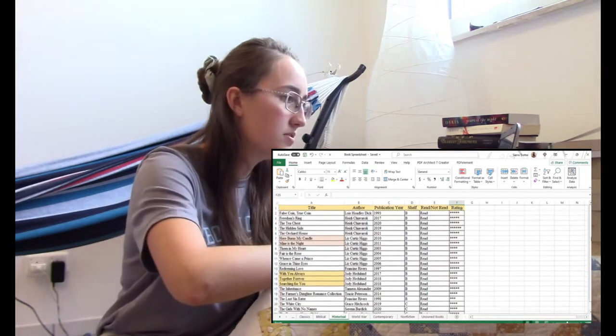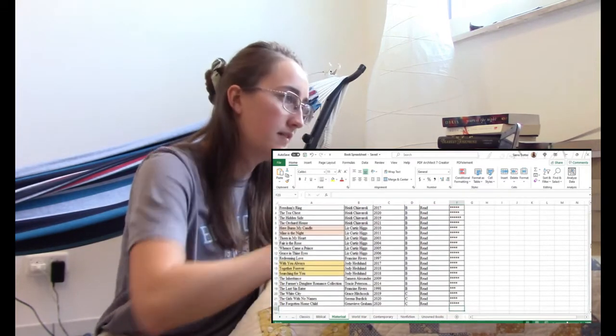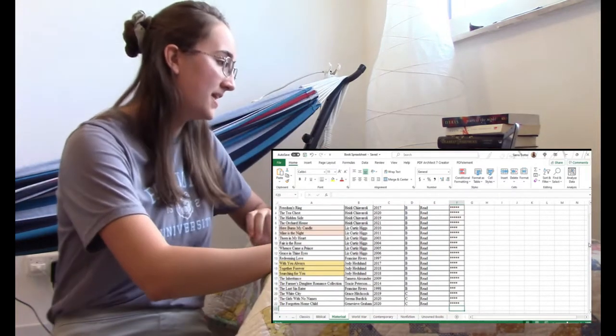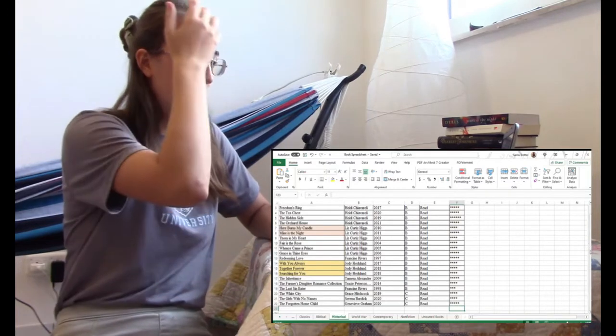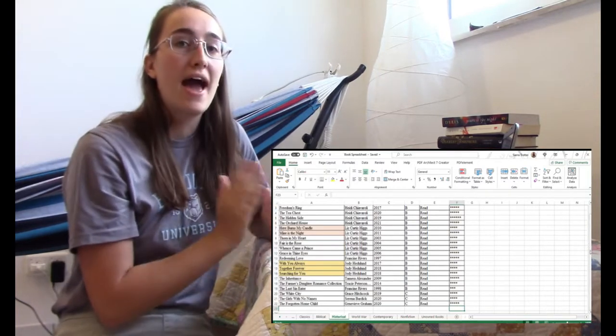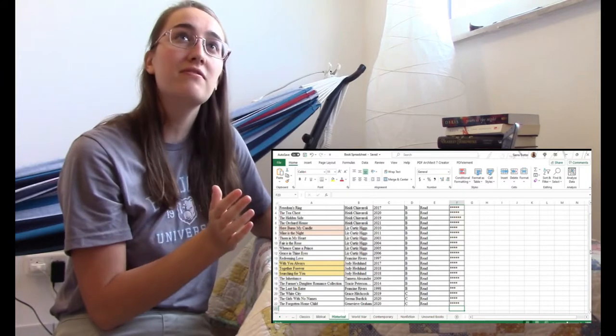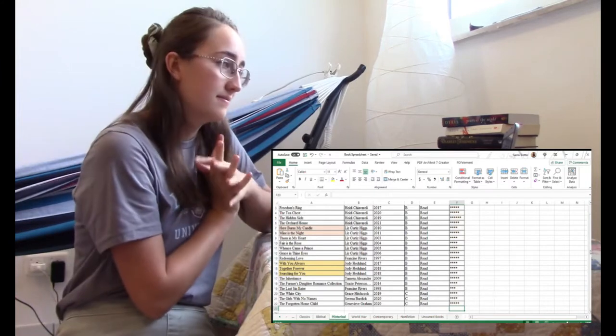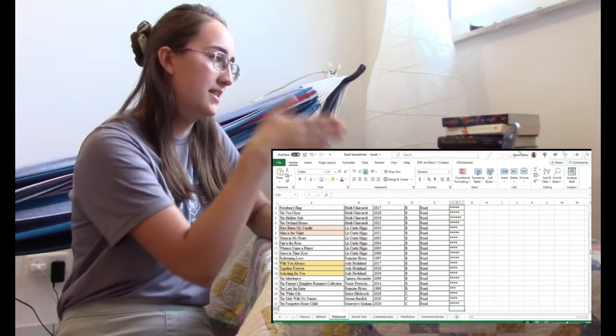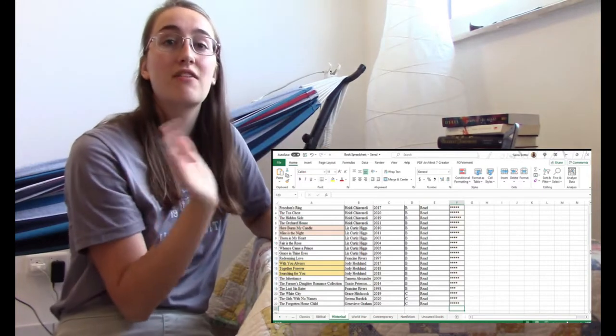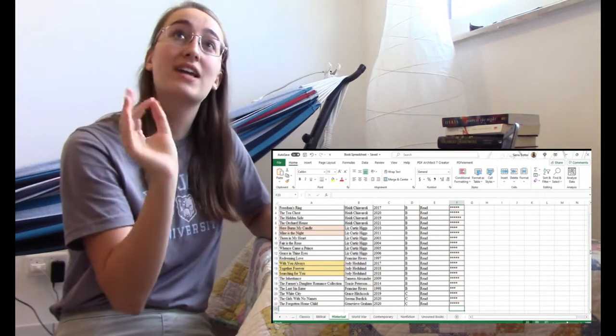So we have a couple historical books that we are going to be shelving. So to the best of my ability, I do have this spreadsheet lined up according to how it is on the shelf. So starting with Freedom's Ring, then The Tea Chest, that's how it is shelved from left to right looking at it on the shelf.